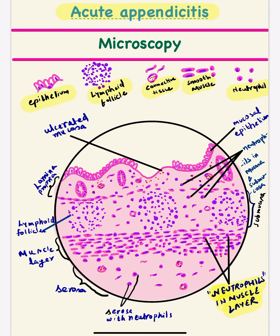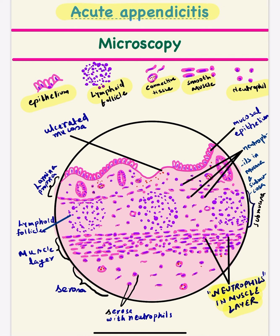At the end we just have to show the neutrophilic infiltration of all the layers of the appendix, so you need to know the normal histology. The appendix has four layers. First is the mucosa, which is composed of the mucosal lining epithelium. The epithelium is tall columnar and has interspersed goblet cells. You have to make the tall columnar epithelium with nuclei perpendicular to the basement membrane.